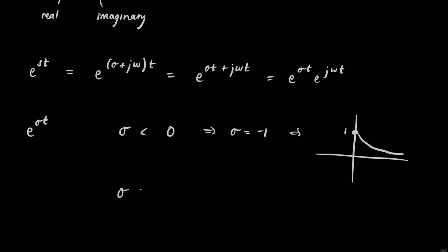When sigma is greater than zero, you're going to end up with something that's an increasing exponential. So, this actually, by the way, this would also just be like that on the other side of the graph. Let's just make that a bit more obvious.